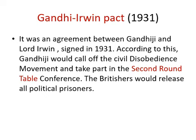Gandhi-Irwin Pact 1931: It was an agreement between Gandhiji and Lord Irwin, signed in 1931. According to this, Gandhiji would call off the Civil Disobedience Movement and take part in the Second Round Table Conference. The British would release all political prisoners.